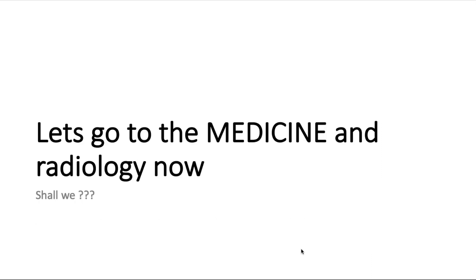Moving to the medicine and radiology part: without a basic concept, mugging up won't help you much. We're looking at a chart — I believe from First Aid — showing how Mycobacterium tuberculosis enters through the respiratory system. When you breathe in the bacilli, they usually go into the right lung because the right bronchus is shorter and steeper — about two centimeters versus five centimeters on the left — and more aligned with the trachea.